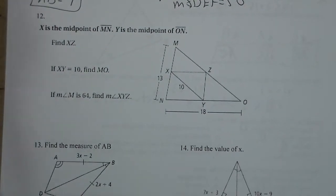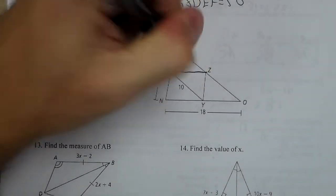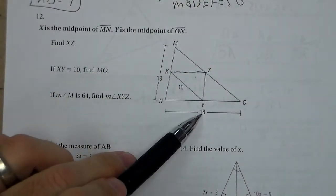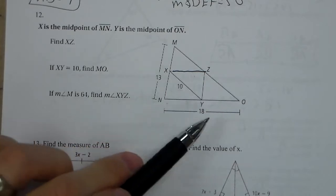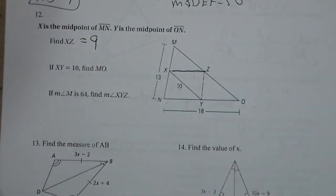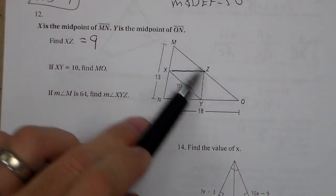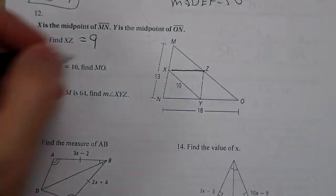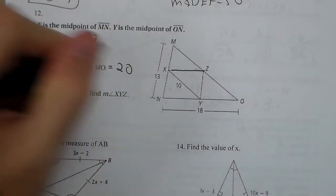For number 12, we need to find XZ. XZ is a midsegment. It is parallel to the 18, this side down here NO. So it is half the length because the midsegment is half the length of the parallel side. So we're just going to put 9. Now if XY is 10, we need to find what MO is. Now that's going in the opposite direction. MO would be double that. It would be 20.